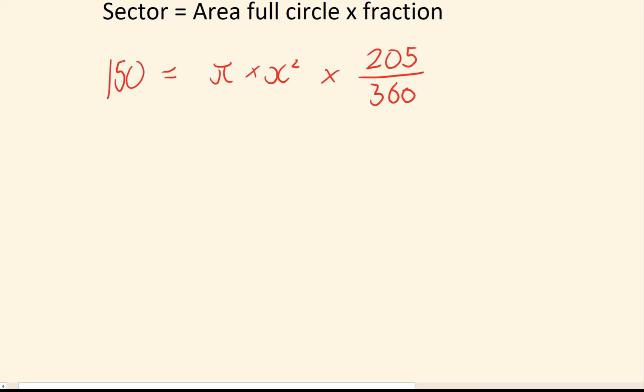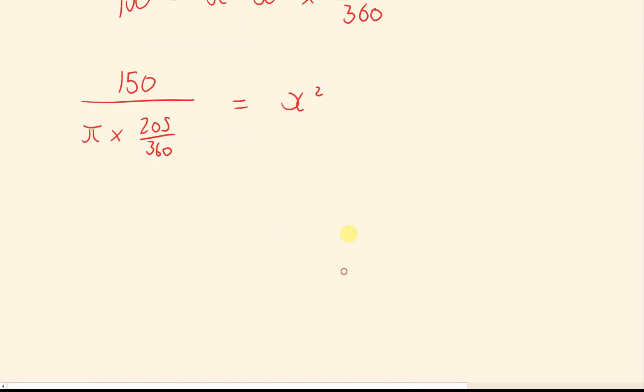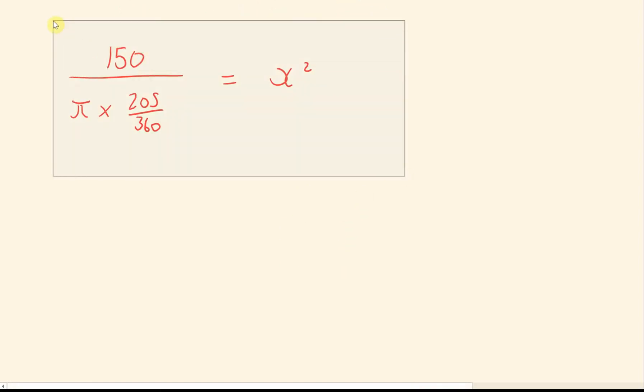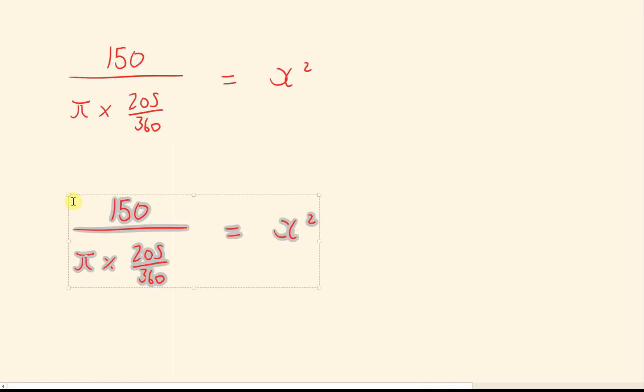Again, it's sort of like the first example. We've got a bunch of stuff being times by x squared, and the opposite of times is dividing. So if I do 150 divided by pi times 205 over 360, that means I'm left with x squared. This one's slightly harder. We then have one last step. Here we can work out what x squared is, but we don't want x squared, we just want x. The opposite of squaring is going to be square root, so x will be that square root.